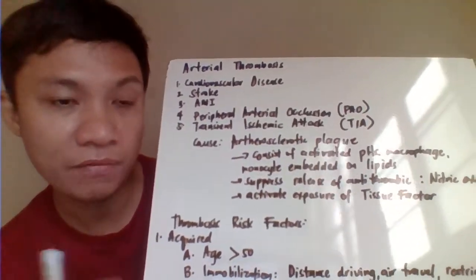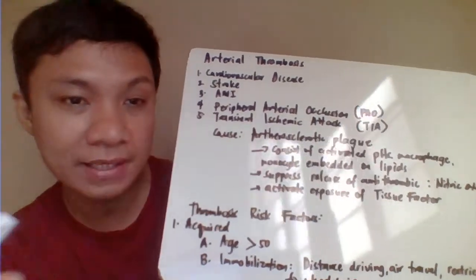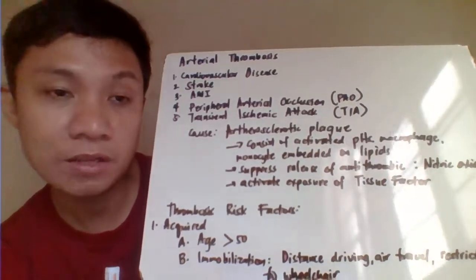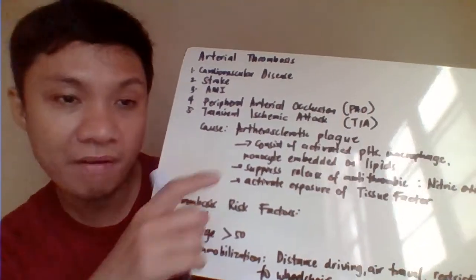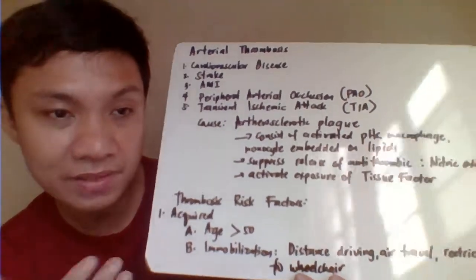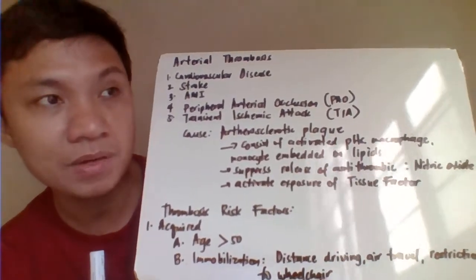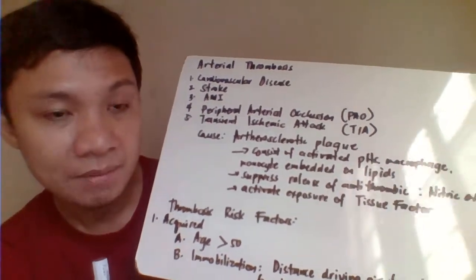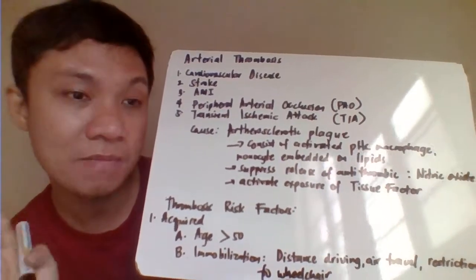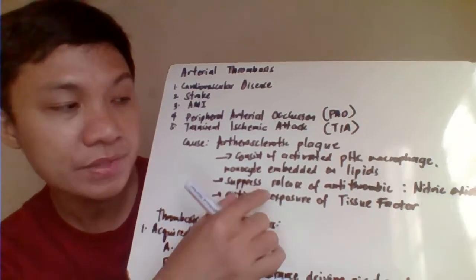Arterial thrombosis is primarily caused by the production of atherosclerotic plaque, made up of activated cells including platelets, monocytes, and macrophages embedded in fats or lipids. This suppresses the release of nitric oxide — which is responsible for vasodilation — while also activating the release of tissue factor. Tissue factor combines with Factor VII to cause clot formation.